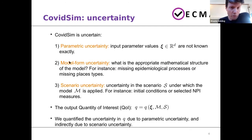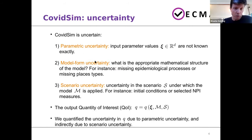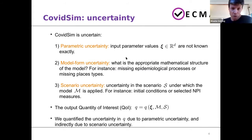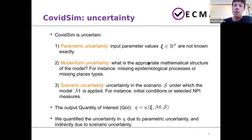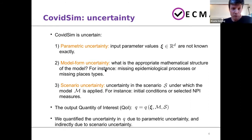The second form is model form uncertainty, also called model inadequacy or model error. Basically it is related to the mathematical structure of the model. I usually work with fluid simulations, so I have a set of partial differential equations and I can point to the mathematical assumptions in those equations. In the case of COVID-SIM, as already pointed out by the first speaker, you can think of things like missing processes or missing place types.